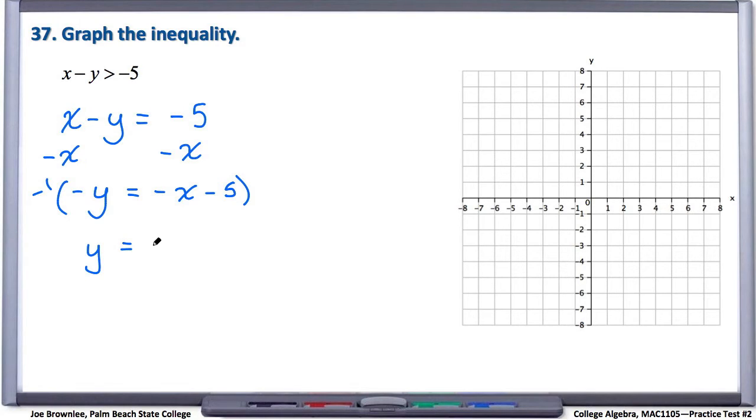And so we have y equals x plus 5. And now we can easily graph this line because we know that our y intercept is at positive 5.